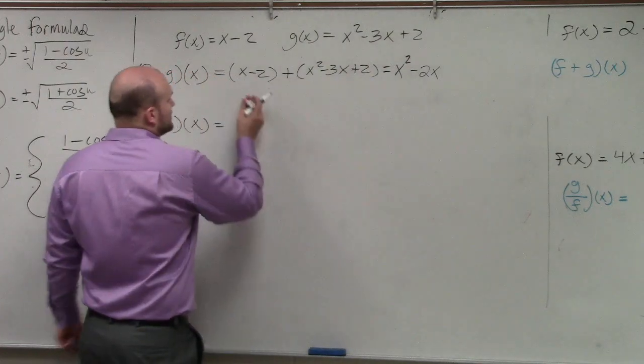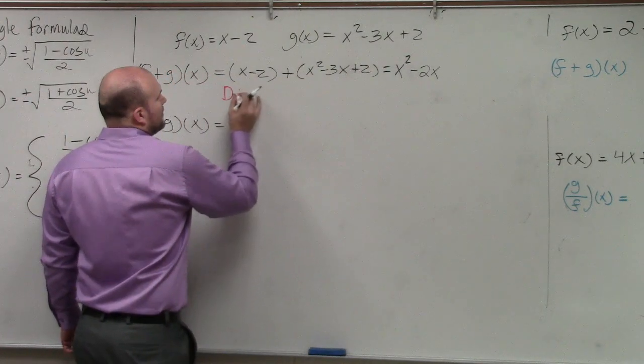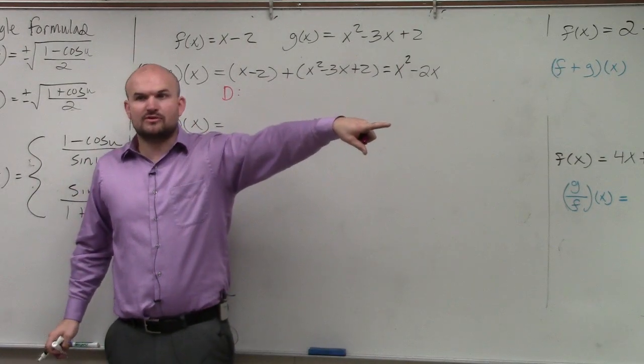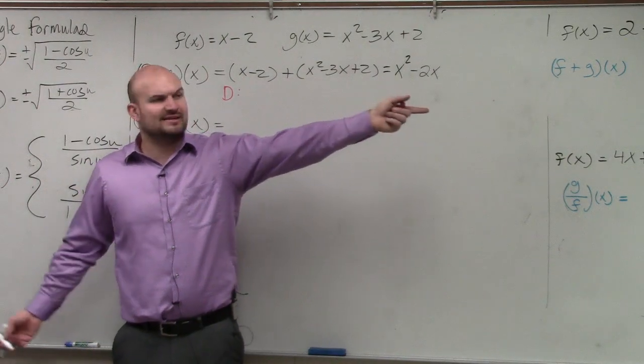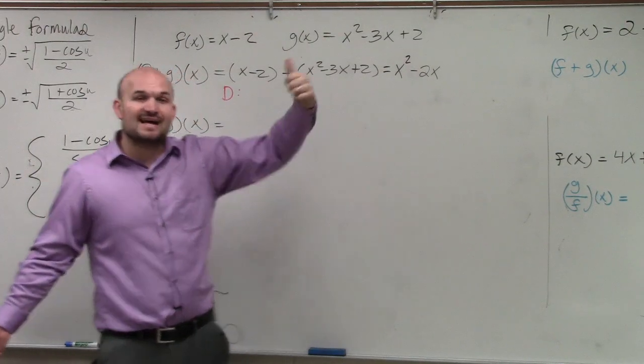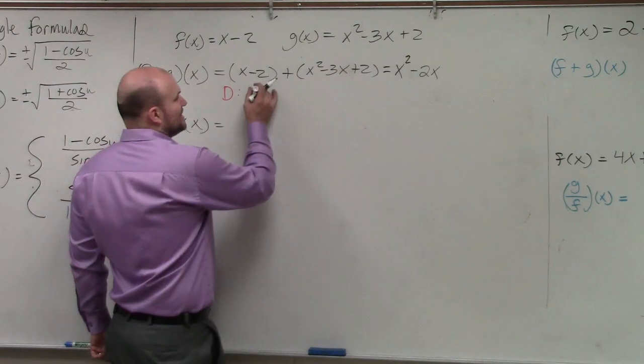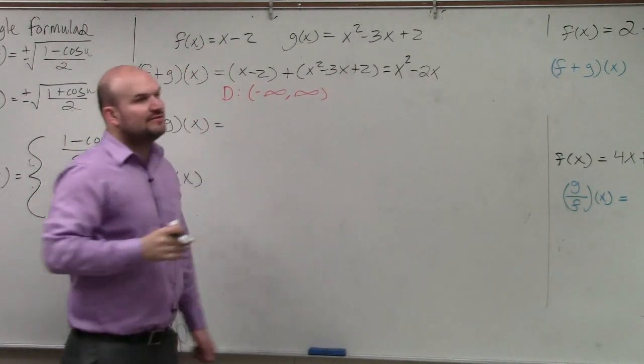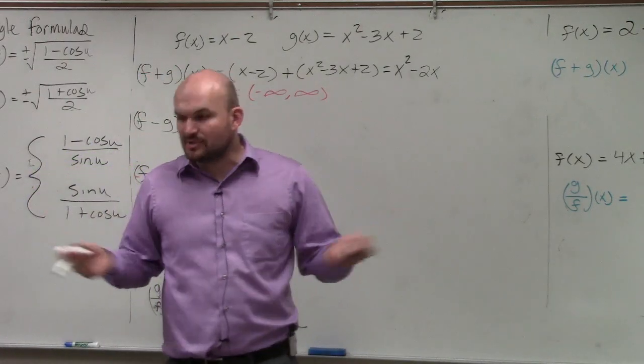Then I go and look at the domain. Is there any restrictions that I talked about for my domain on the graph? Do I have anything in the denominator or anything under a radical? So guess what? As of right now, there's nothing for me to believe that my domain is going to be restricted at all. So it's going to be from negative infinity to infinity, or all real numbers.